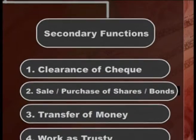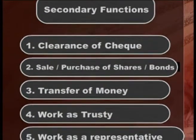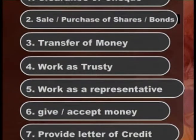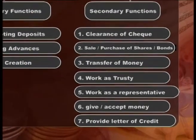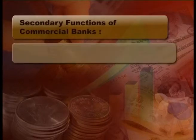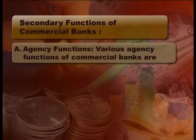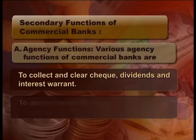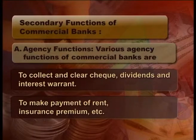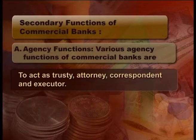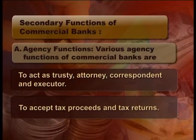Secondary functions of commercial banks: Along with the primary functions, each commercial bank has to perform several secondary functions too. It includes many agency functions or general utility functions. The secondary functions of commercial banks can be divided into agency functions and utility functions. Various agency functions of commercial banks are: to collect and clear checks, dividends, and interest warrants; to make payment of rent, insurance premium, etc.; to deal in foreign exchange transactions; to purchase and sell securities; to act as a trustee, attorney, correspondent, and executor; and to accept tax proceeds and tax returns.